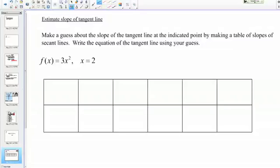Let's do an example about estimating the slope of the tangent line. Here are the directions. Make a guess about the slope of the tangent line at the indicated point by making a table of slopes of secant lines, and then write the equation of the tangent line using your guess.